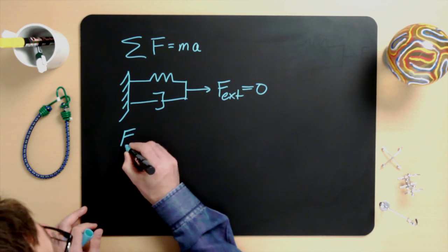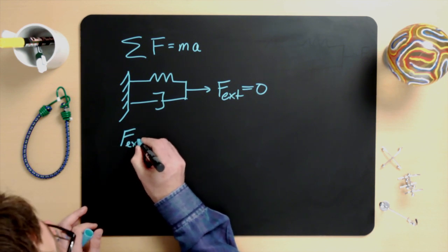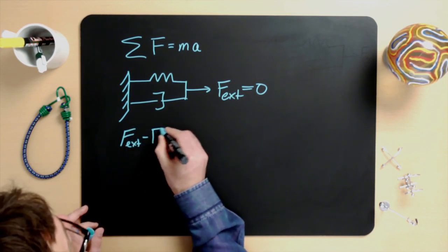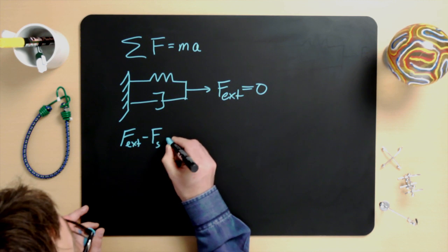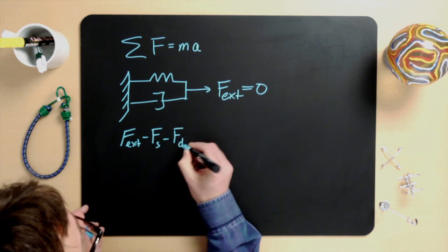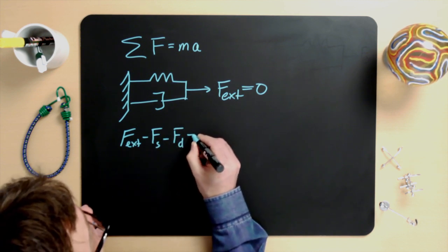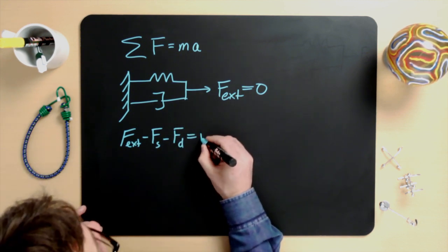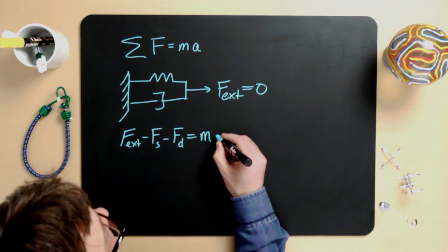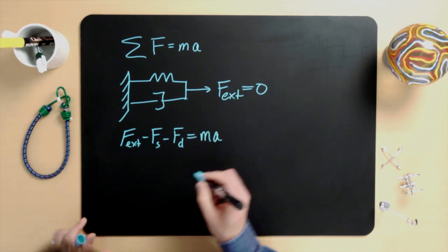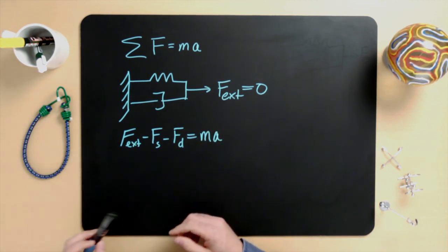The external force has a positive sign, but the spring force and the damping force both have negative signs, and adding all of those together must be equal to the mass times acceleration. I strongly recommend that you get in the habit of making sure that you think about the physical meaning of each force as you incorporate it into Newton's laws.